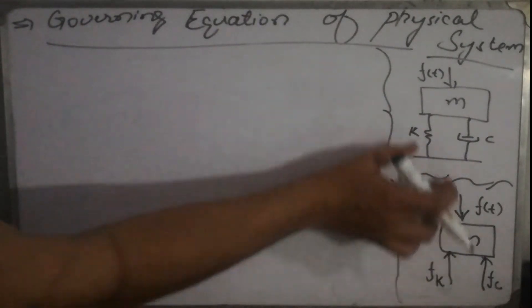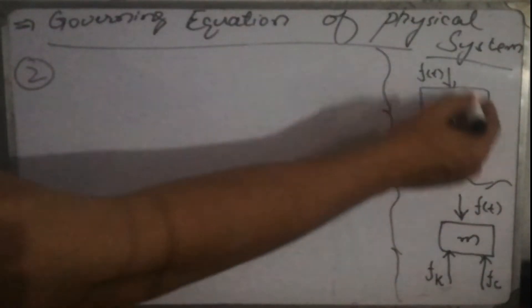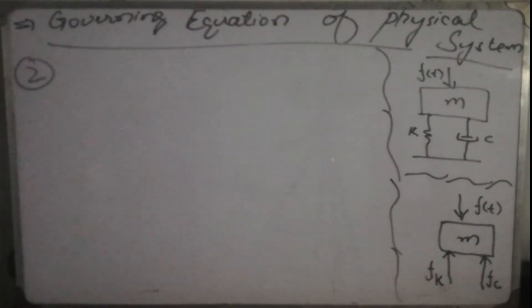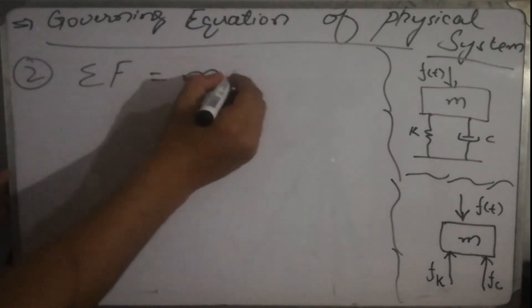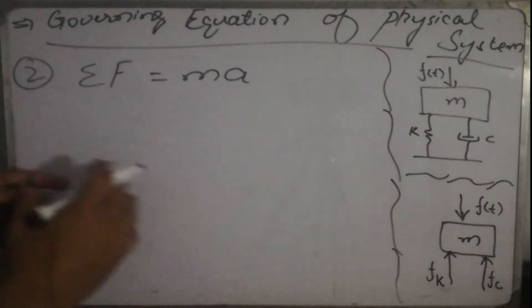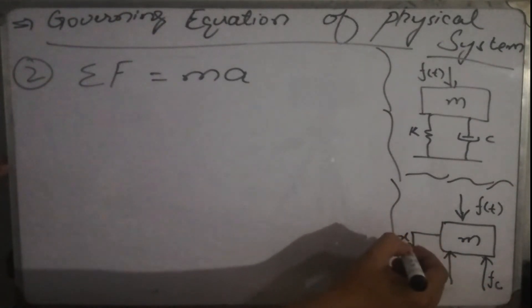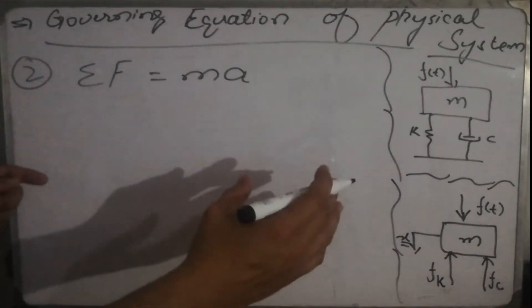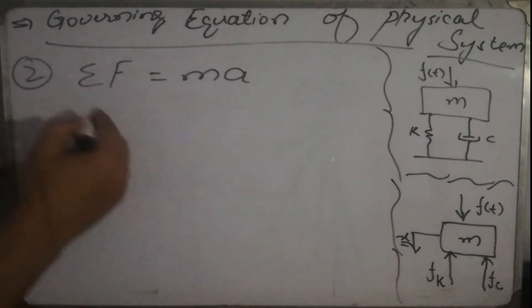Our second step is to apply a physical law relevant to the system. Since we have a mechanical system, we apply Newton's law: the summation of forces applied on a mass equals the mass multiplied by the acceleration produced. Forces in the direction of displacement are taken as positive, while forces opposite to the direction of displacement are taken as negative.